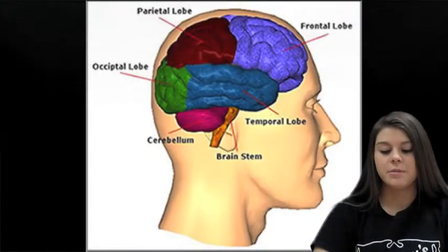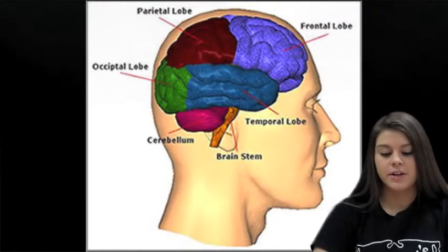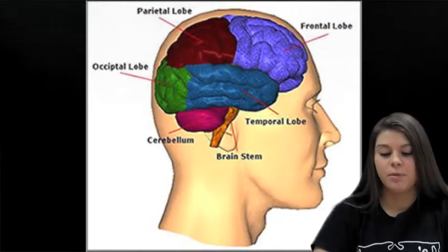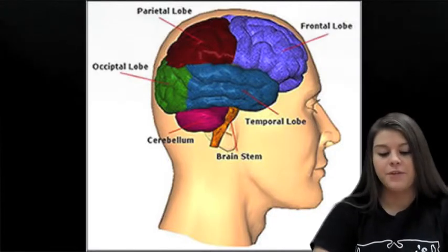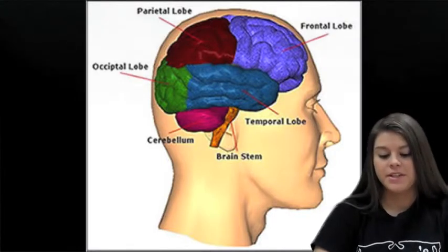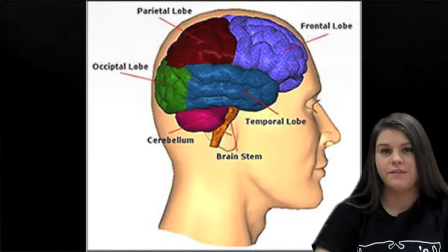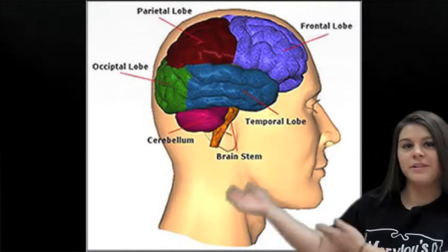Now that you know all the parts of the brain, let's get started. To learn about the exterior brain, click on either the temporal lobe, occipital lobe, parietal lobe, frontal lobe, or the cerebellum. If you want to learn about the interior lobe, wait for the next picture.